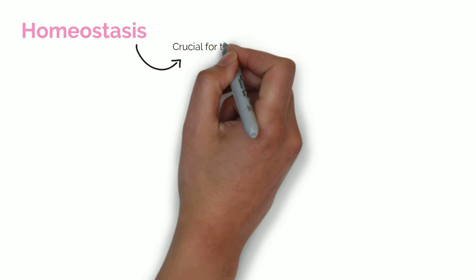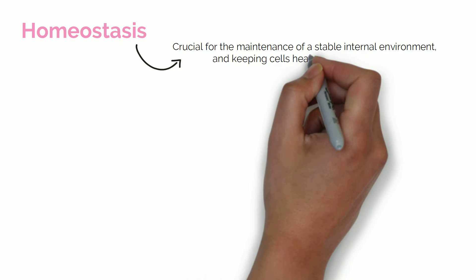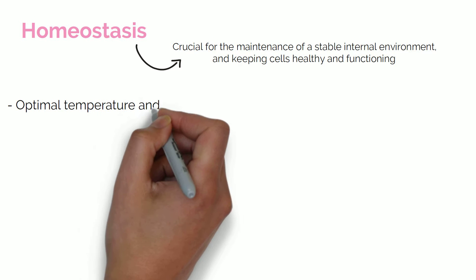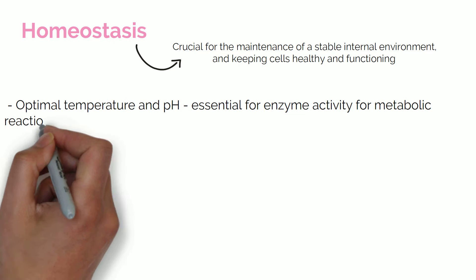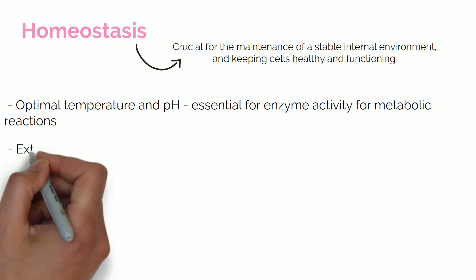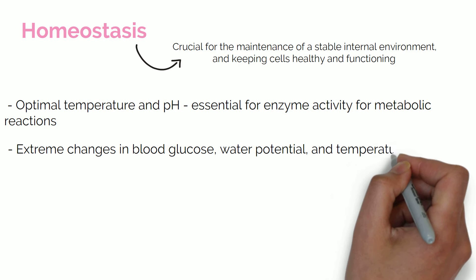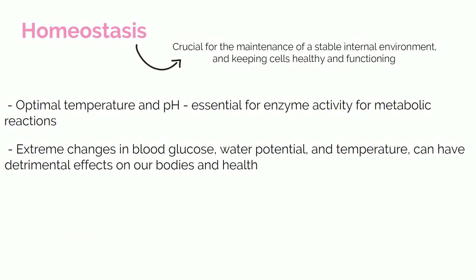Homeostasis is crucial for the maintenance of a stable internal environment, or set points, which is vital for keeping cells healthy and functioning. Optimal temperature and pH are essential for enzyme activity for metabolic reactions. Extreme changes in blood glucose, water potential and temperature from their set points can have detrimental effects on our bodies and health.